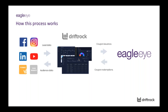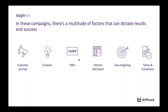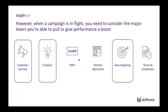The GDPR and data bits are definitely something to pick up early if you think of planning one of these campaigns, as that can sometimes be a little bit of a challenge. In these campaigns there's a multitude of factors that can dictate success. At the fundamental level you've got things like which partner merchants you're using, the offer that's in place and the terms and conditions — when does it need to be redeemed, are there any strict rules. But also elements such as the customer journey, creative and geotargeting. When a campaign is live, the major levers you can pull to actively improve performance are the customer journey, the creative and the geotargeting.